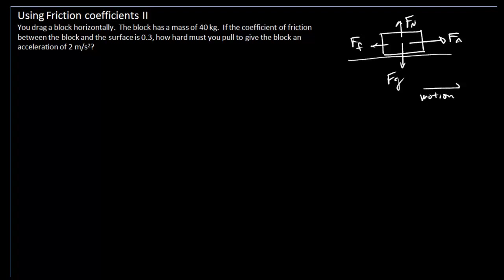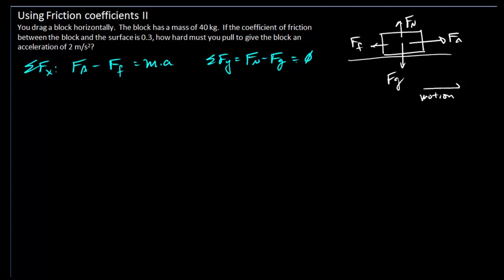At this point we can now write our Newton's second law equations based on our free body diagram. So the sum of forces in the x direction: we have our applied force minus the force of friction, and this equals m times a. In the y direction it's just the normal force minus the gravitational force, and these are going to equal zero, because all of our motion is in the x direction. I'll call to the right positive x, and up positive y.